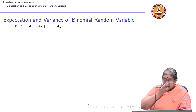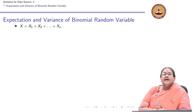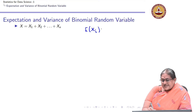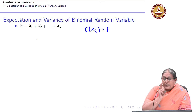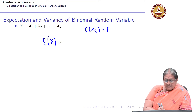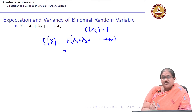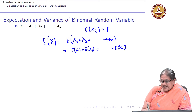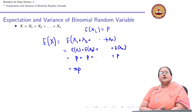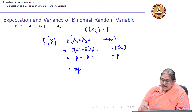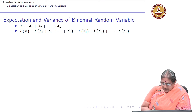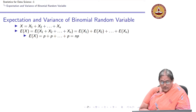Once I have X expressed as a sum of n independent Bernoulli random variables, and the expectation of each xi equals p, from properties of expectation the expectation of X equals the expectation of x1 plus x2 plus ... plus xn, which is the sum of expectations: p added n times, giving expectation of X equal to n times p.